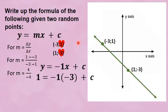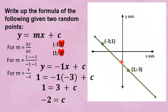Now you choose a coordinate — I chose the top point where x is negative 3 and y is 1, and replace that in. Negative times negative is a positive, so 1 is equal to positive 3 plus c. Take that positive 3 over and minus it: c is negative 2. The y-intercept is negative 2, and it does lie between 1 and negative 3, so it makes sense. Your equation is y is equal to negative x minus 2.